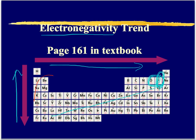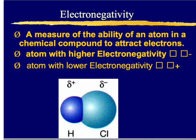Elements over here on the left we would say have low electronegativity. Elements especially up here — not those noble gases — but over here we would say have high electronegativity. Here's our formal definition: electronegativity is a measure of the ability of an atom in a chemical compound to attract electrons. Atoms with higher electronegativity are going to be oxygen and fluorine. Atoms with lower electronegativity are going to be like lithium and sodium.